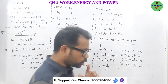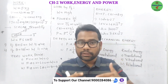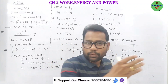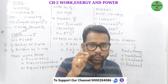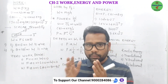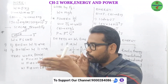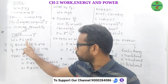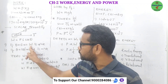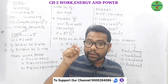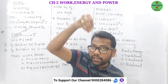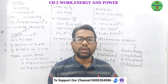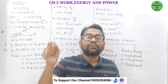Based on W = Fs cosθ, we can understand positive work, negative work, and zero work done. Work done is positive when a body is displaced in the direction of the applied force — the angle between force and displacement is zero degrees, cos 0° = 1, so W is positive. Example: work done by gravity on a freely falling body is always positive, since the gravitational force acts downward and displacement is also downward.